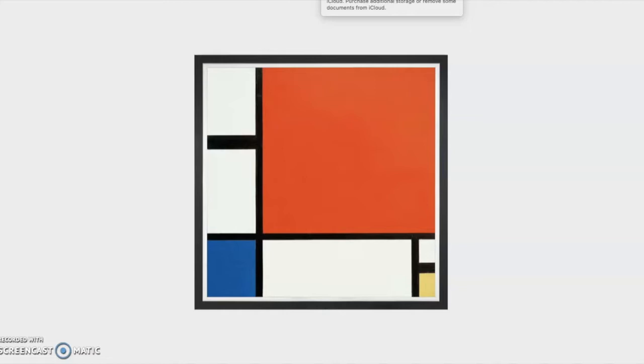This piece of artwork is called Composition 2 in Red, Blue, and Yellow. We're going to take a peek at what we see in the artwork. I see long and short straight lines. I even see colors besides red, yellow, and blue. I also see white and black.